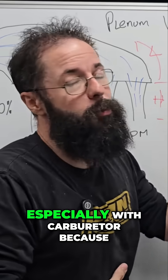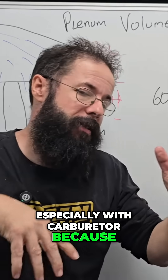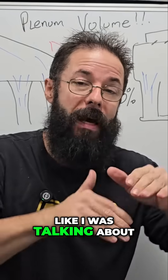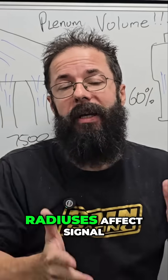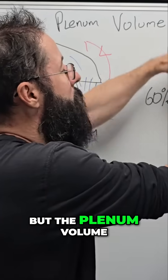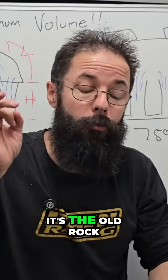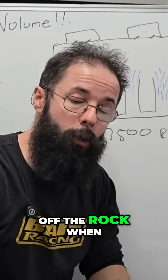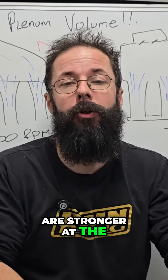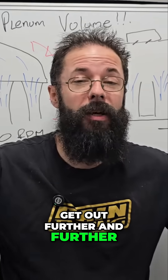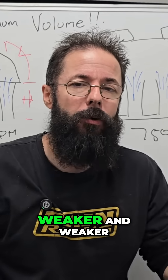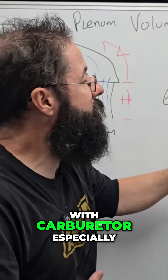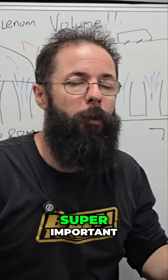With a tunnel ramp, especially with a carburettor, there's another aspect to consider: signal. The radiuses affect signal, but the plenum volume does as well. It's like a rock in a pond — the waves coming off the rock are strongest at the nucleus, and as we get further out, they dissipate. So the signal gets weaker and weaker. If we want good signal with a carburettor, the plenum volume is super important.